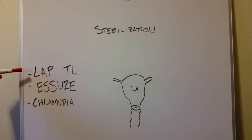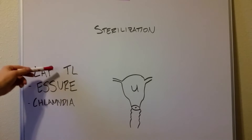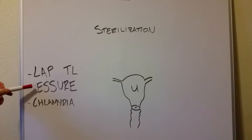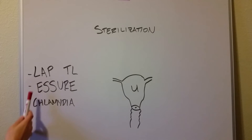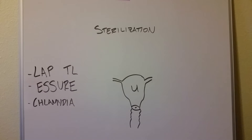The first two are elective: a laparoscopic tubal ligation or an Essure procedure. And the third one is chlamydia or pelvic inflammatory disease. I'm bringing that up because of its prevalence on board exams and because of its similarities to the Essure procedure in process, not in actual technique, obviously.